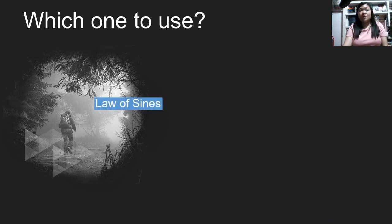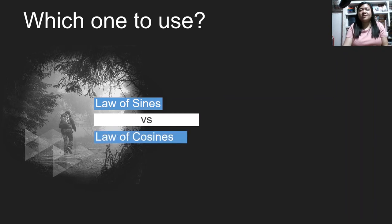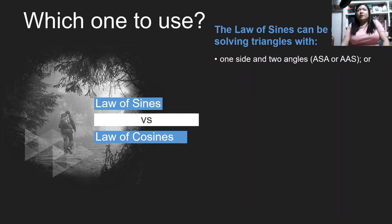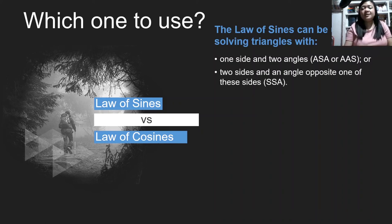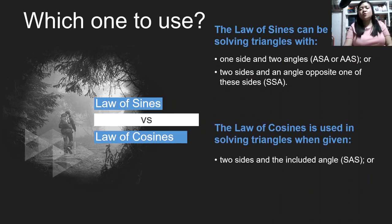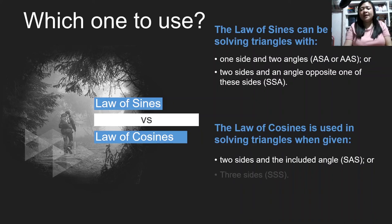Before we end, how do we know which law to use — the law of sines or the law of cosines? We can use the law of sines if the triangle has one side and two angles given (we get the third angle by subtracting from 180 degrees), or if two sides and an angle opposite one of the given sides are given. Otherwise, we use the law of cosines: when two sides and the included angle (SAS) are given, or when three sides (SSS) are given, like in the last example.